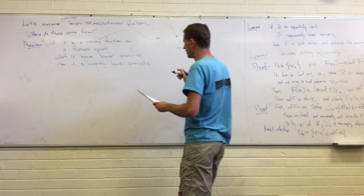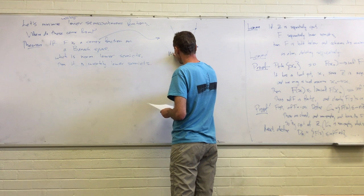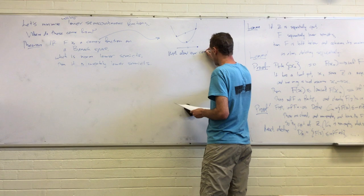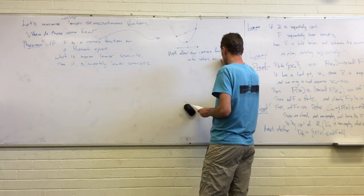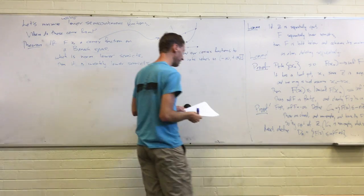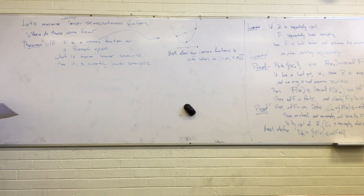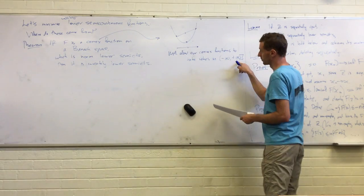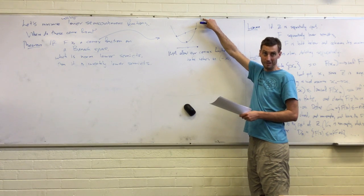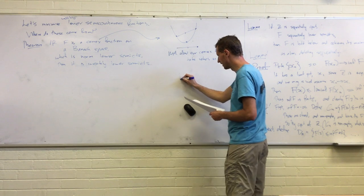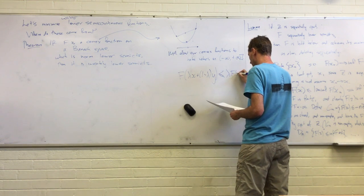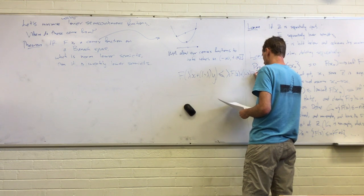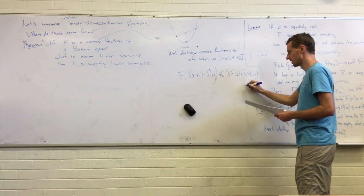One thing to maybe point out is that we'll allow our convex functions to take values in the extended reals including positive infinity but not including minus infinity. So, if you think about that, the convexity condition if you look at some point where the value happens to be infinite is pretty boring. Okay. Maybe let me just write out the convexity condition. So, that's the convexity condition and this is for lambda in (0,1).